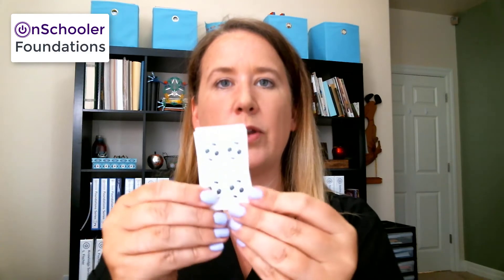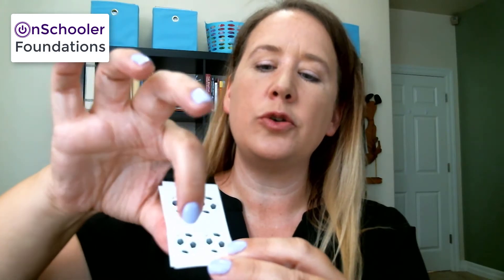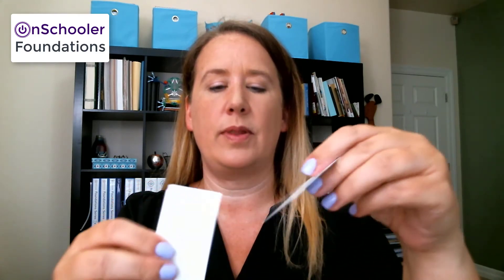This time count with me. How many soccer balls? One, two, three, four. There are four soccer balls. How many fish? One, two, three, four, five. There are five fish. How many elephants? No elephants. That means zero. Zero elephants.